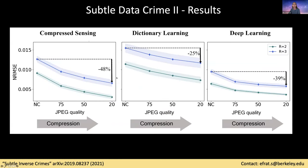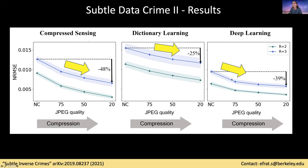Looking at the statistical results: on the left, the error metric on the y-axis and JPEG compression extent on the x-axis. Again, all three algorithms — compressed sensing, dictionary learning, and deep learning — exhibit an artificial reduction of the error metric with data processing. Training and testing models on processed data can lead to very significant bias — up to 48% artificial improvement.